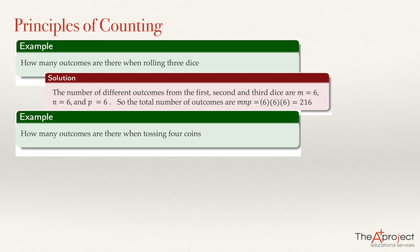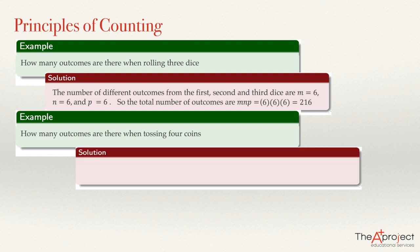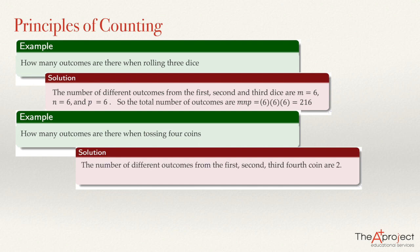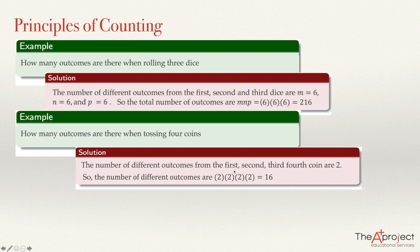Another example: how many outcomes are there when tossing four coins? We know that each time we toss a coin, there are two possible outcomes. If we toss four coins, the total number of outcomes will be two times two times two times two, which equals 16. The multiplication will have as many factors as the number of events we have.